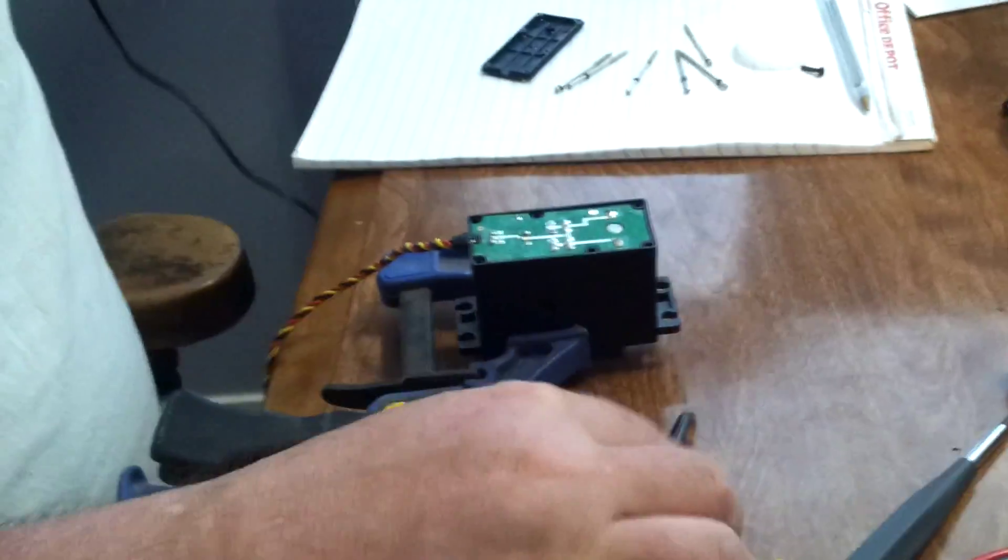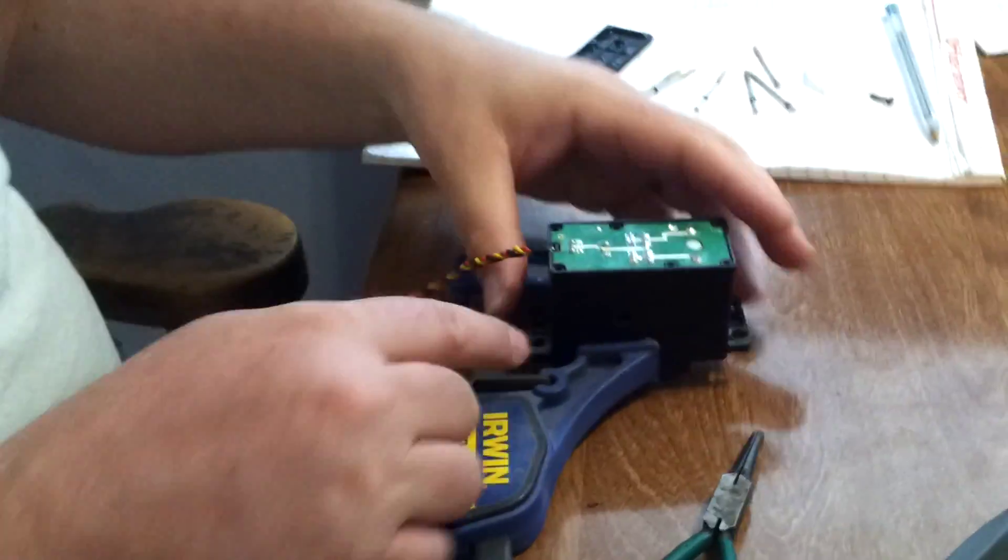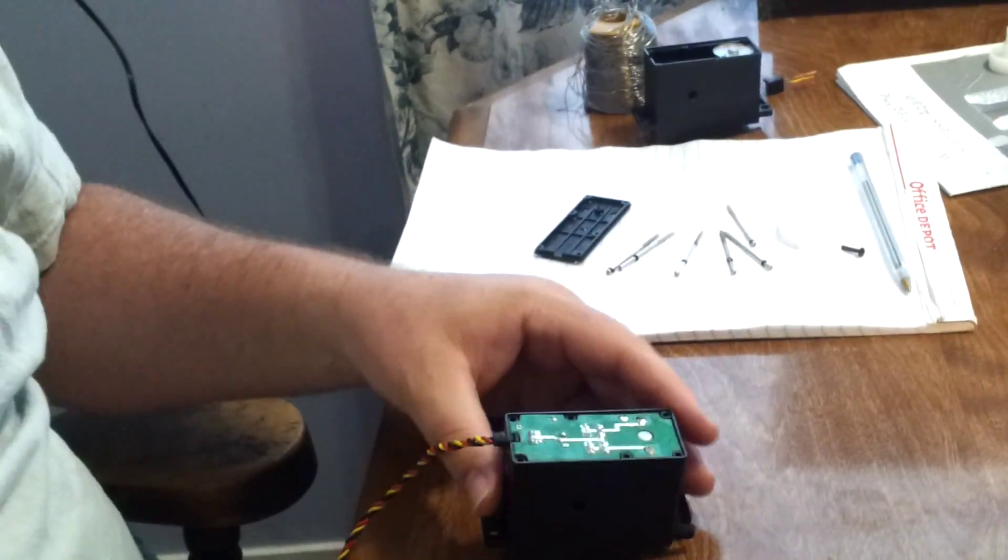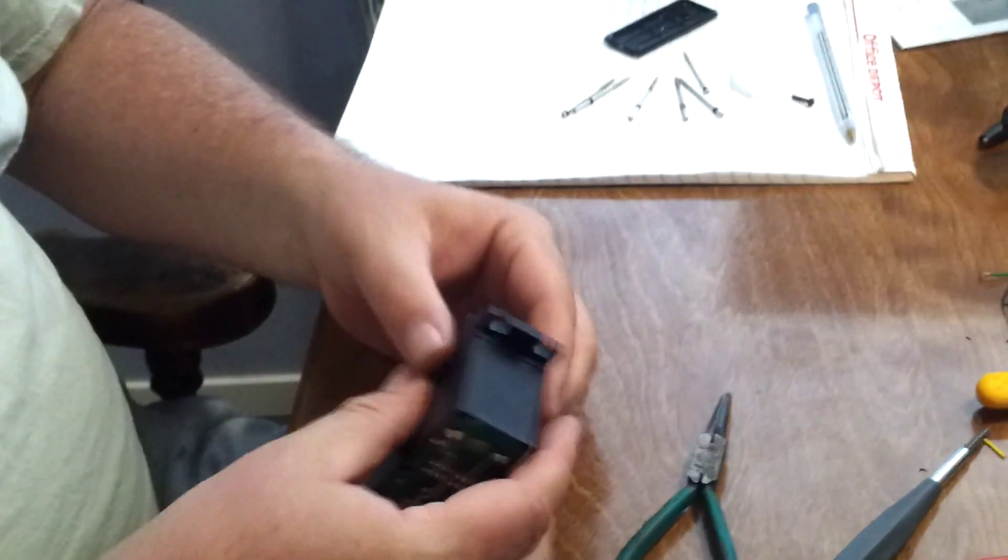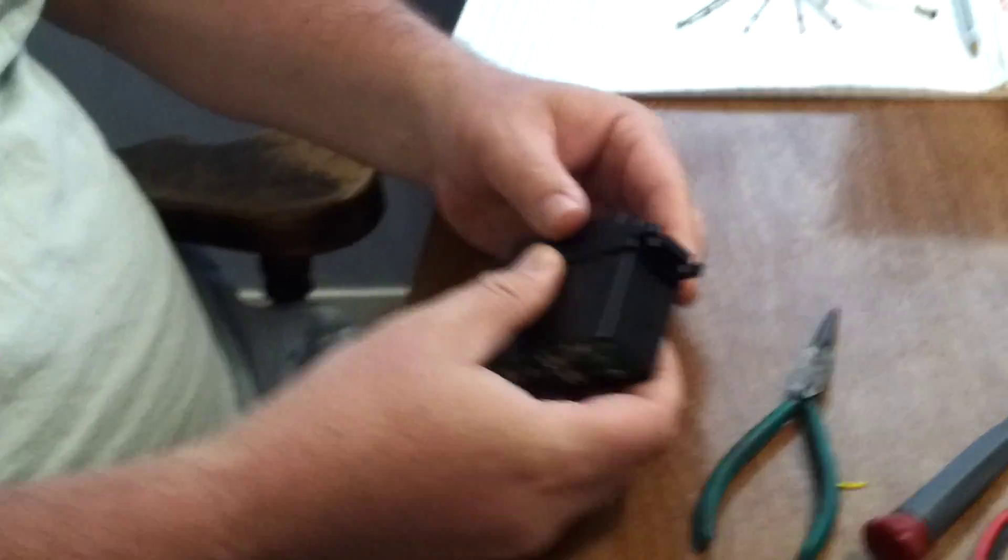You have now lobotomized the servo. The potentiometer is still inside but there's no connections to the circuit board anymore. So now at this point, what we have to do is make some adjustments to the gears.